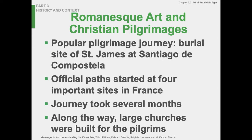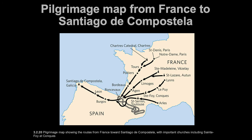Now we're going to switch gears and get over to Europe for Romanesque art and the Christian pilgrimage. Beyond pilgrimages all the way to Jerusalem, there's also the very famous Santiago de Compostela pilgrimage, which goes mainly through Spain. The burial site of St. James is there, and this pilgrimage still exists today — it's about 500 miles. The official path started in France and would take several months. Along the way, pilgrims would stop at churches that were built for them, with relics to visit along the route. This became very popular in the Middle Ages. We're going to look at a map now.